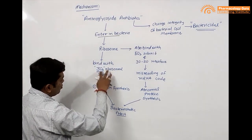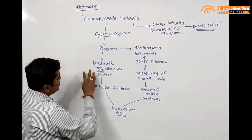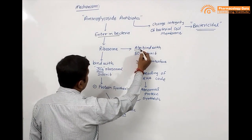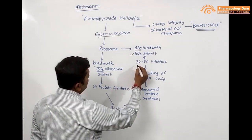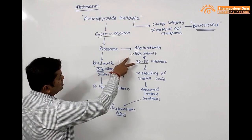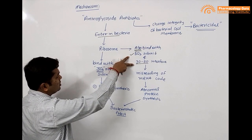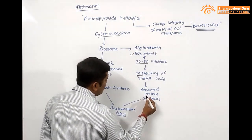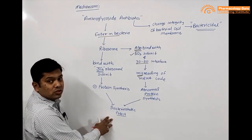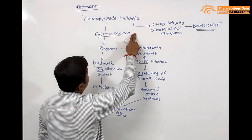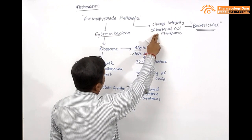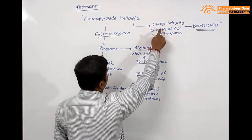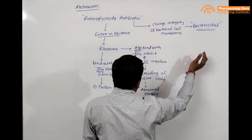Binding with the 30s ribosomal subunit and inhibiting protein synthesis is the main mechanism for all aminoglycoside antibiotics. Streptomycin works only through this mechanism, while other aminoglycosides can also bind with the 50s subunit and the 30s-50s interface, causing misreading of the mRNA code, leading to abnormal protein synthesis and a bacteriostatic effect. The bactericidal effect is due to interference with bacterial cell membrane function.